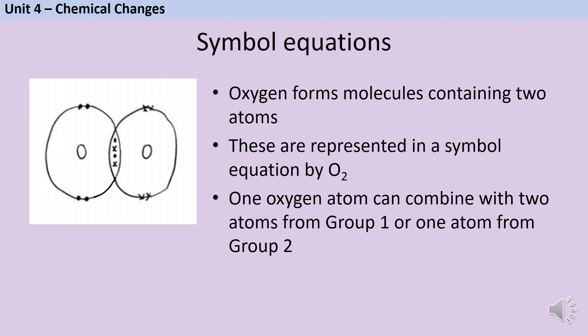In order to write symbol equations for the oxidation of metals, we need to know a little bit about oxygen. Oxygen mainly exists in the world as diatomic molecules. These are molecules that contain two atoms, and they're represented in a symbol equation by O2. The little two tells you that there are two oxygen atoms. One oxygen atom is able to form bonds with two atoms that come from group 1, or one atom that comes from group 2.